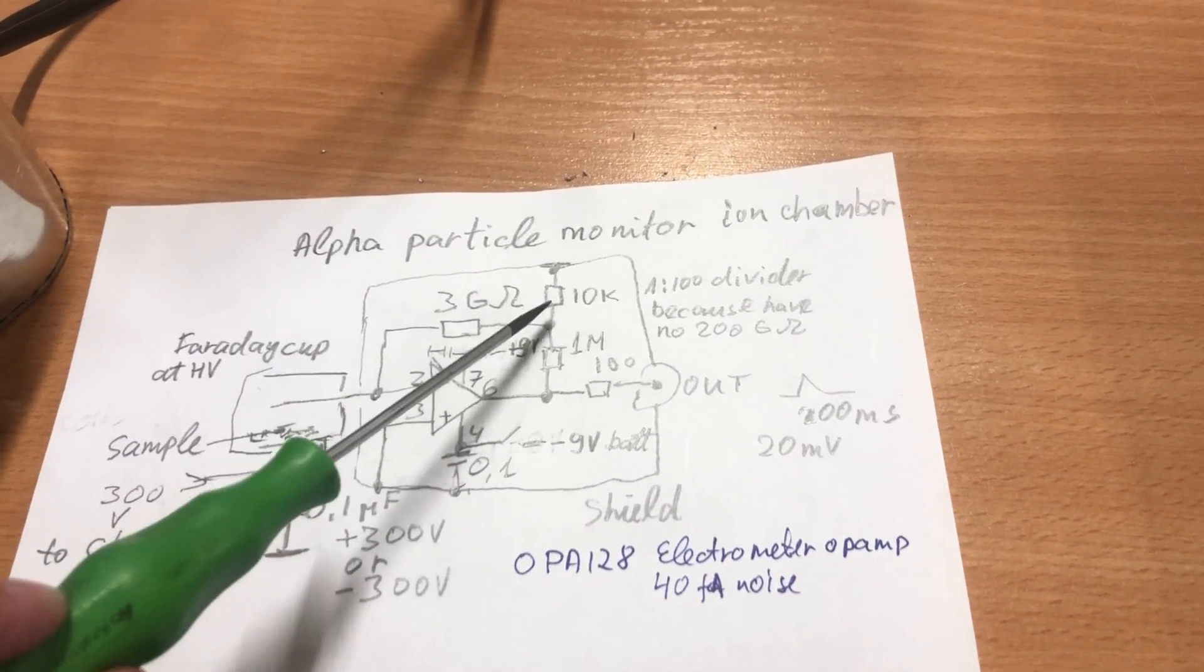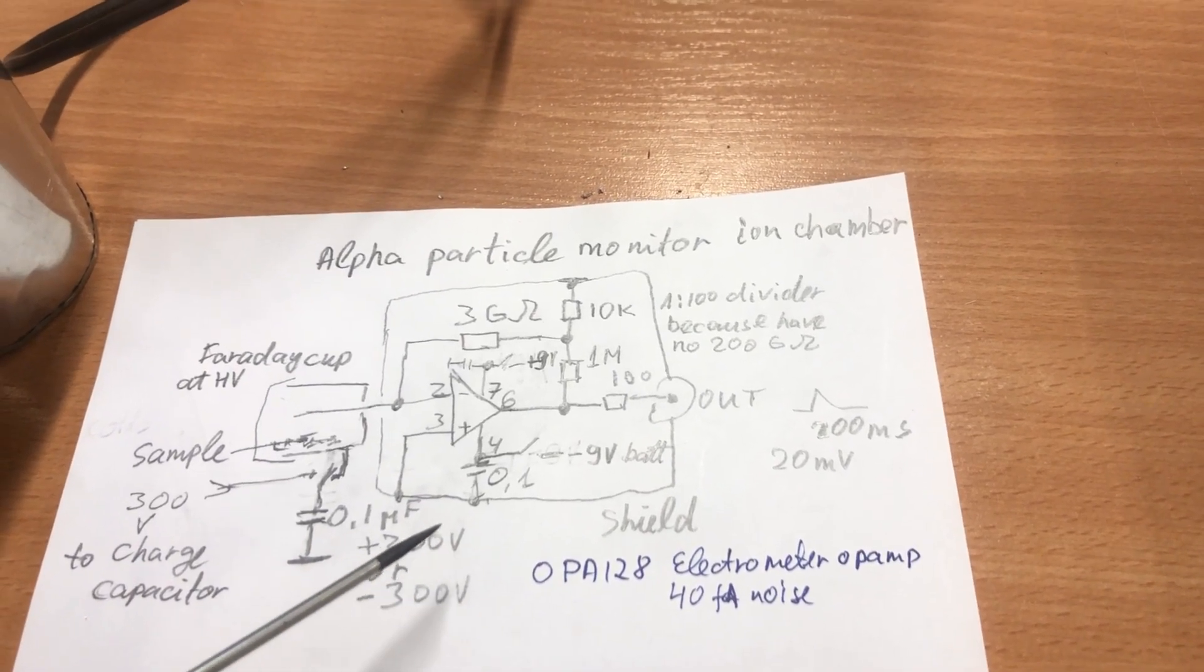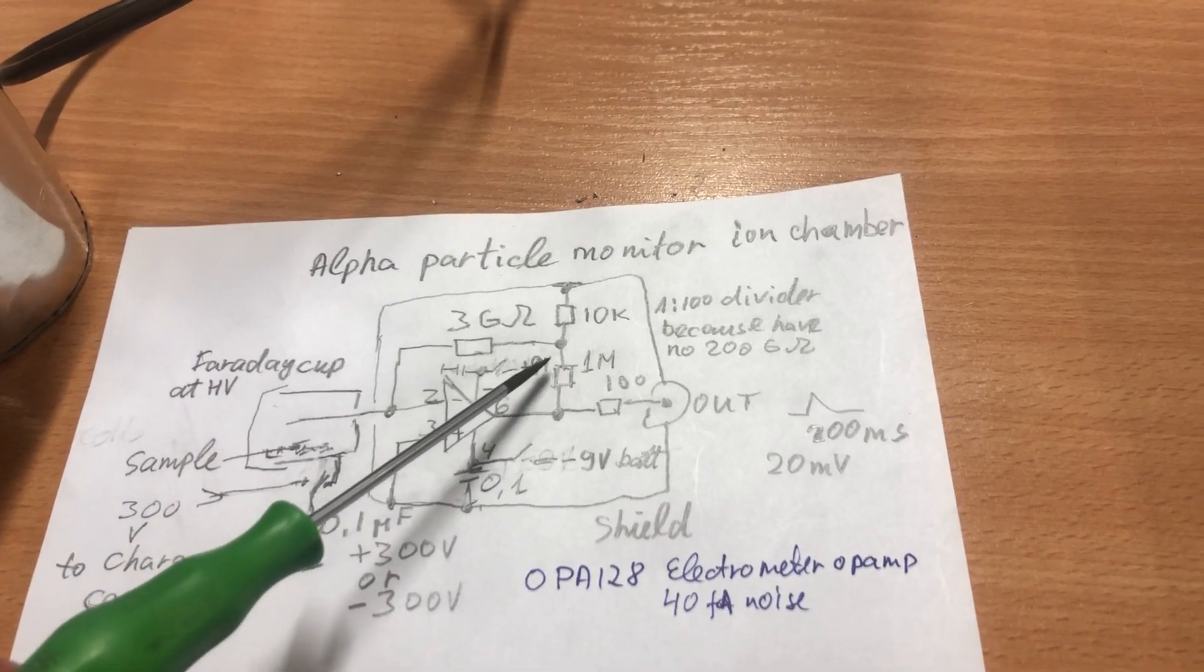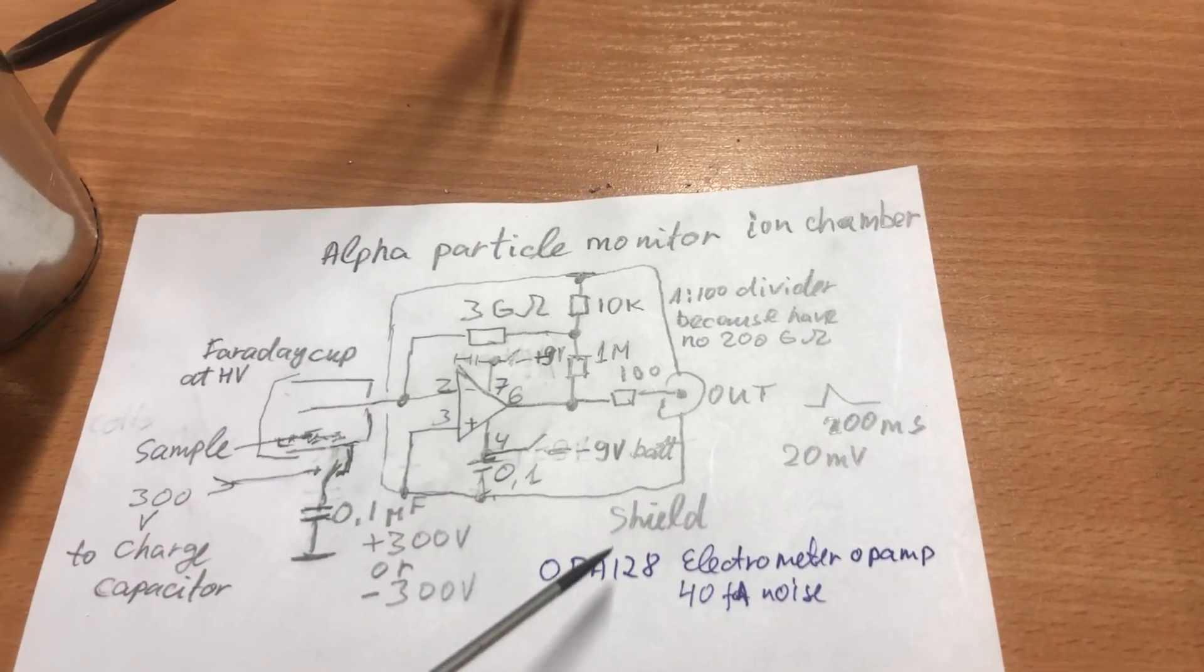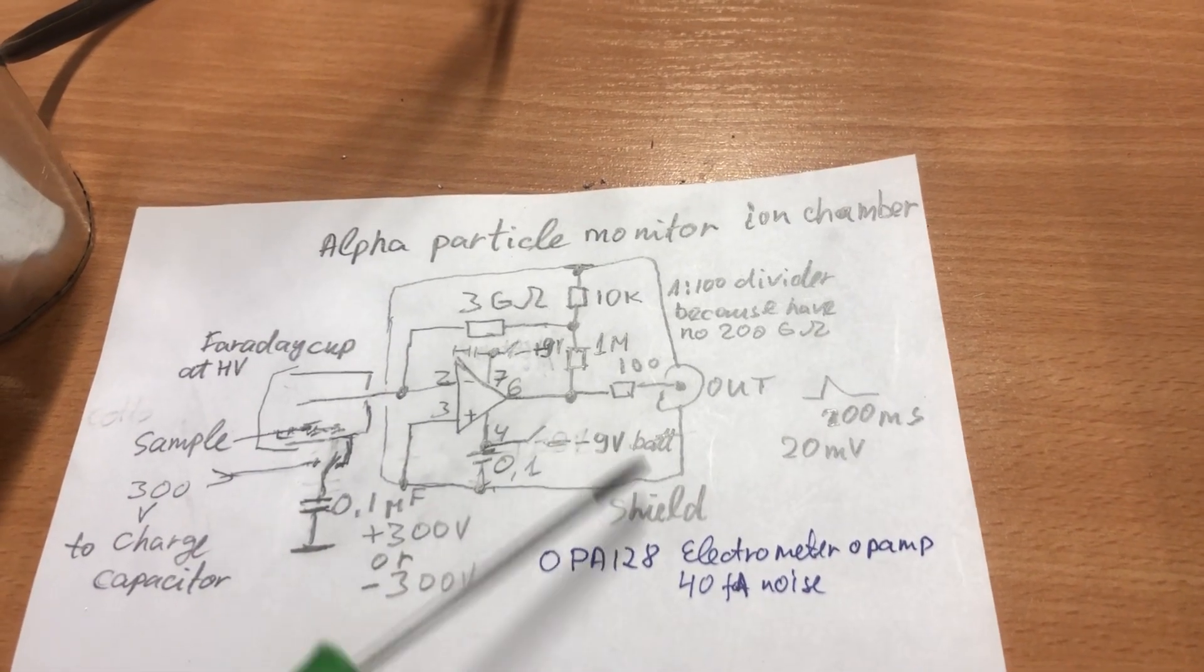And the trick is to use a voltage divider on the output which makes this feedback resistor effectively larger by a factor of 100. 100 ohms protect against self-oscillation.